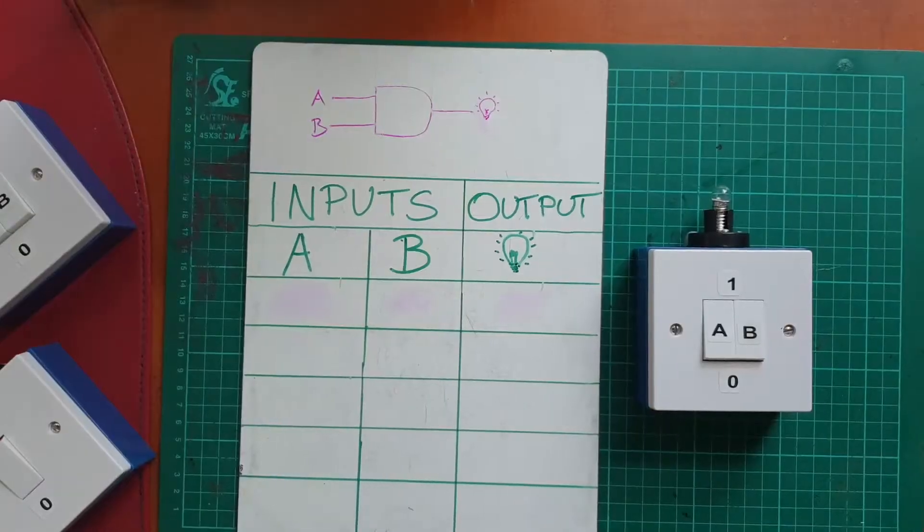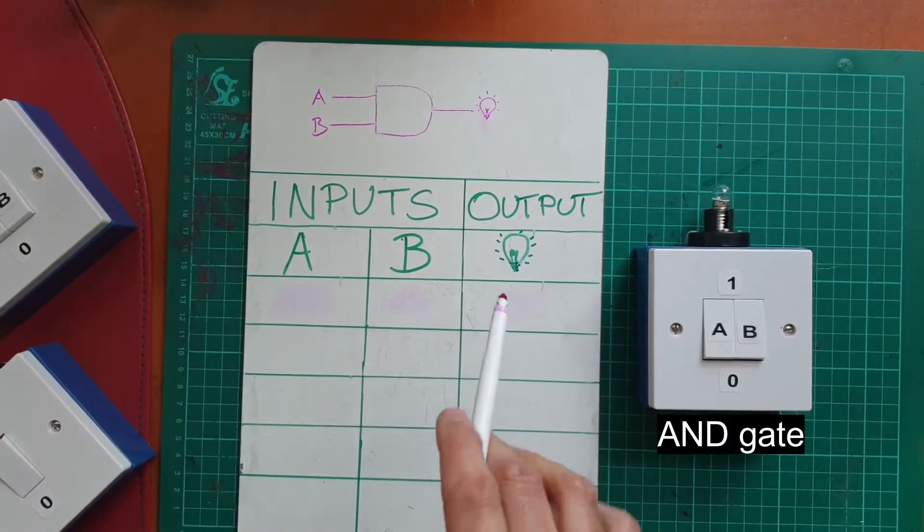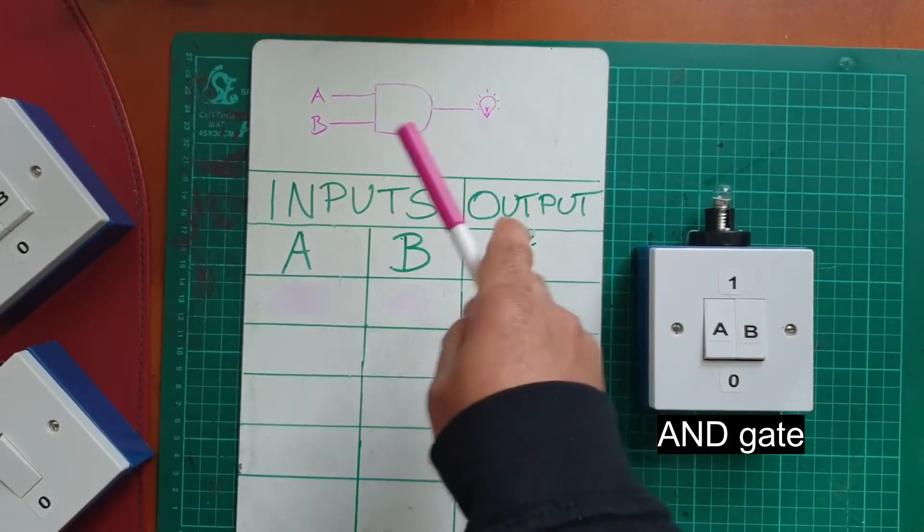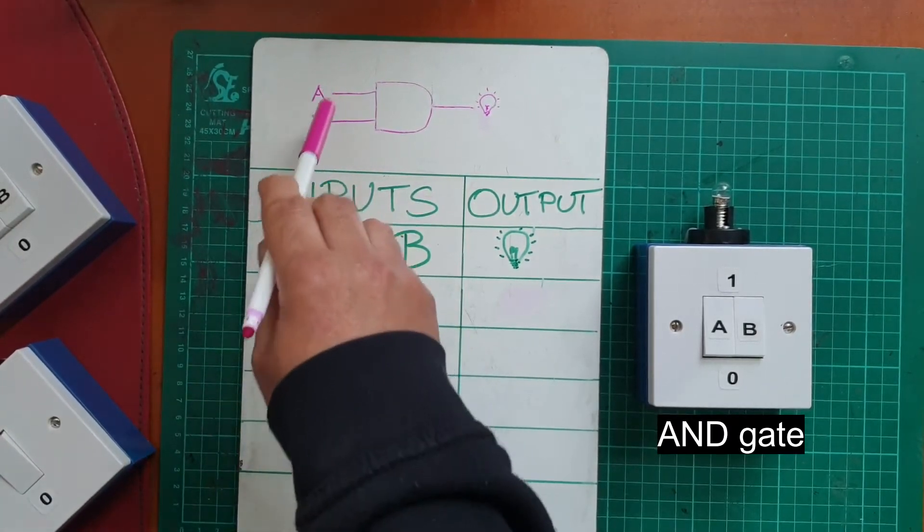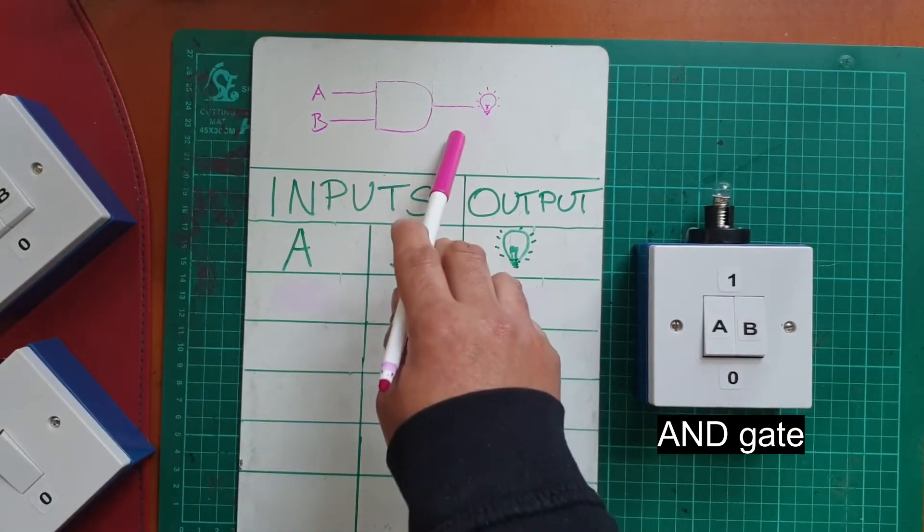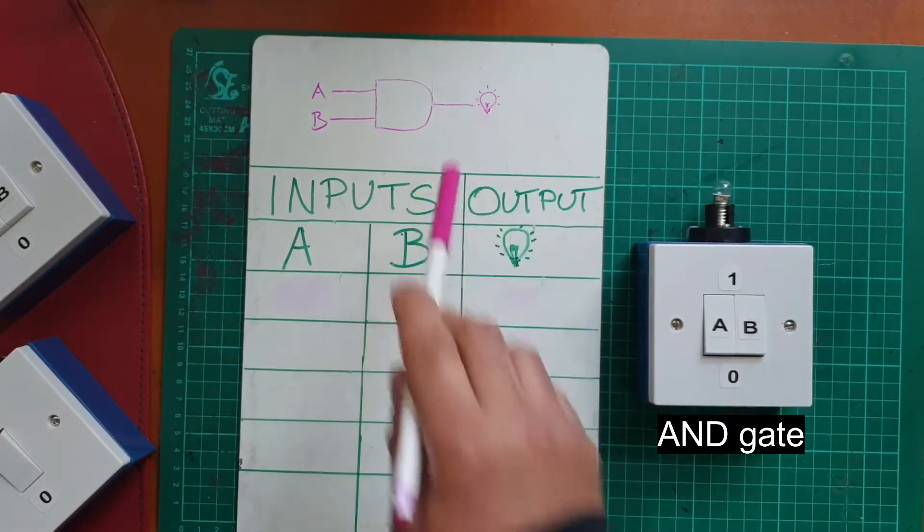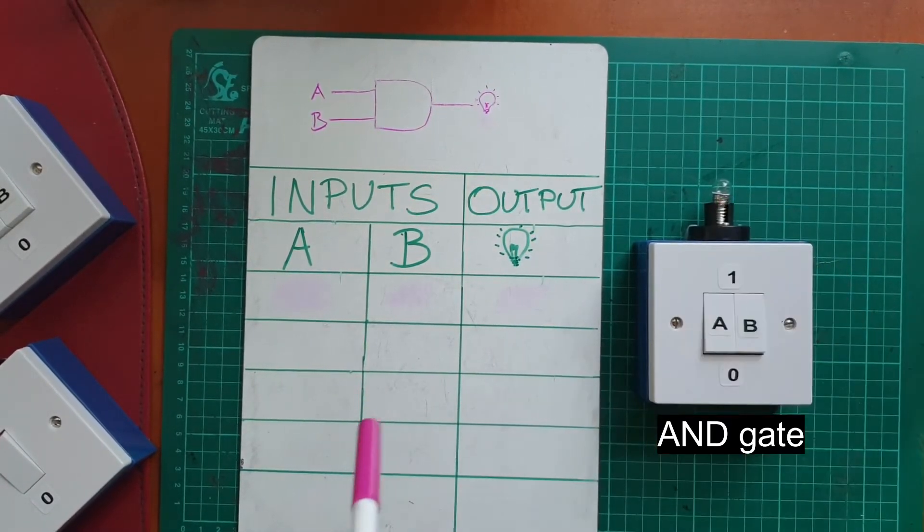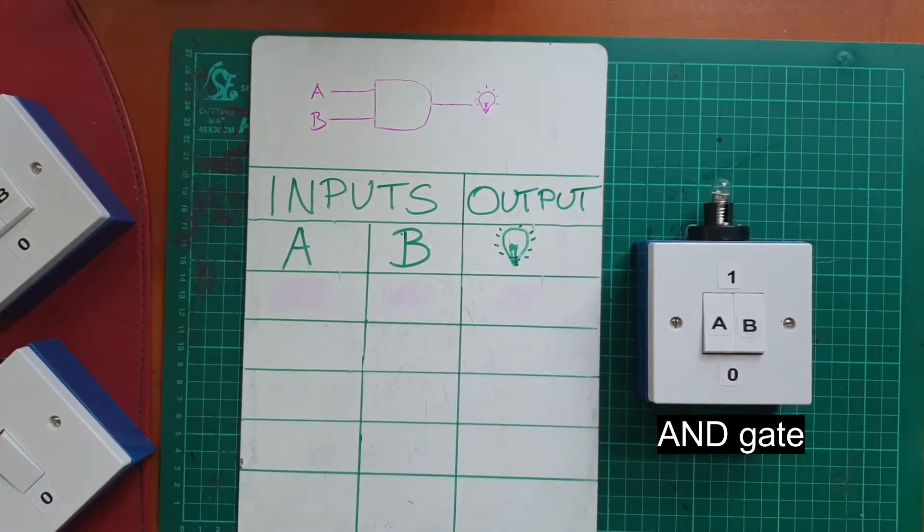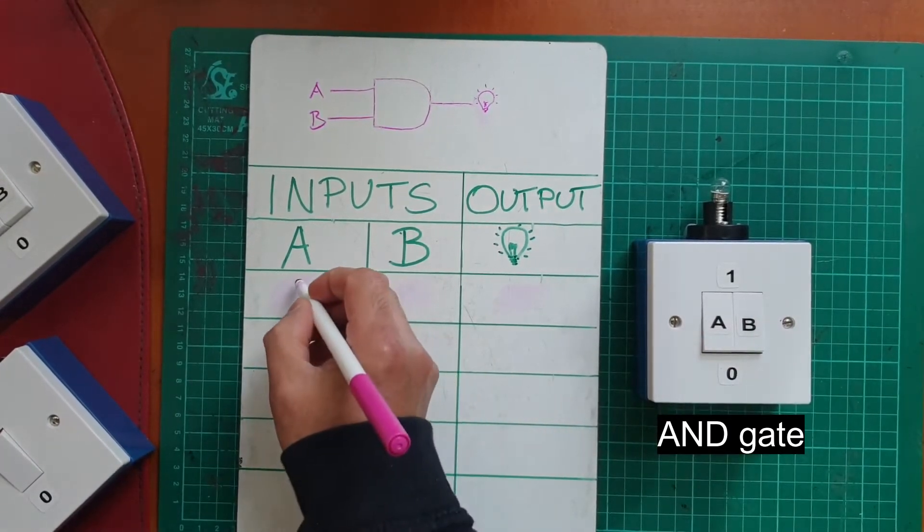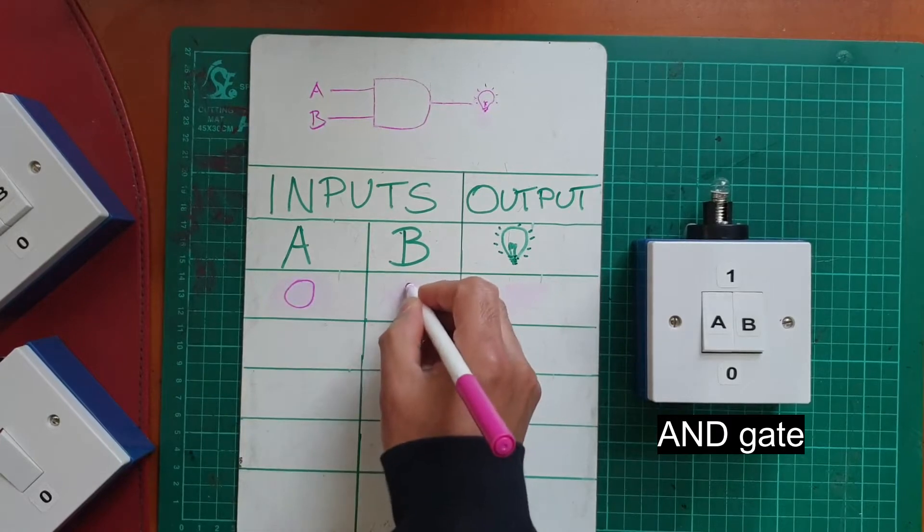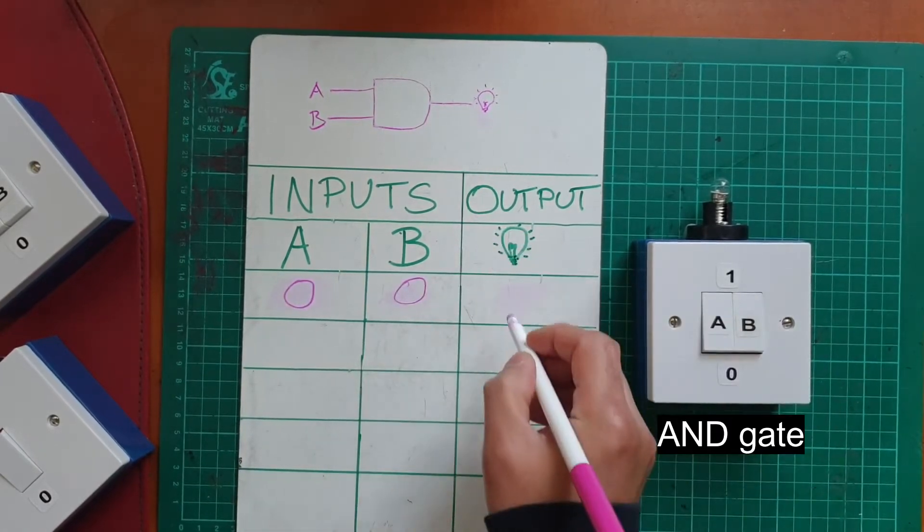So for our first truth table, let's start with the AND gate. This is the symbol for the AND gate: two inputs, A and B, and we are representing the output by the light bulb. To begin with, with both switches in the off position, so we use a zero for off, the output is also off.